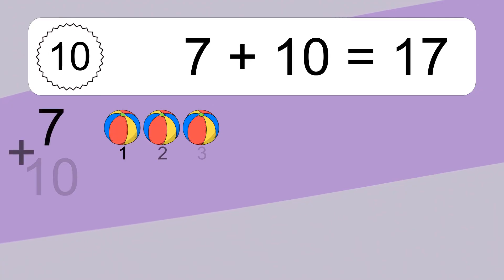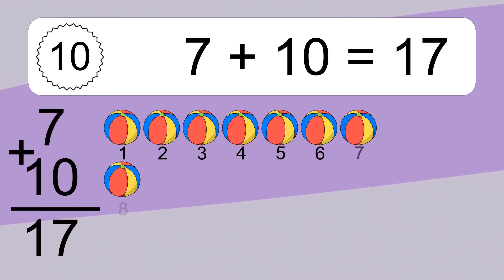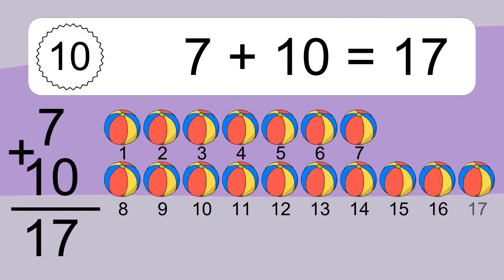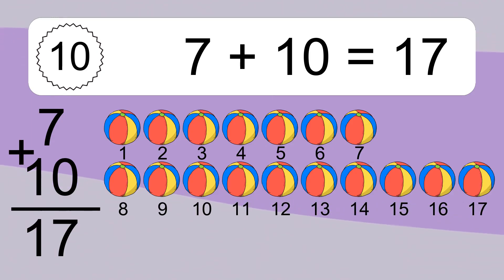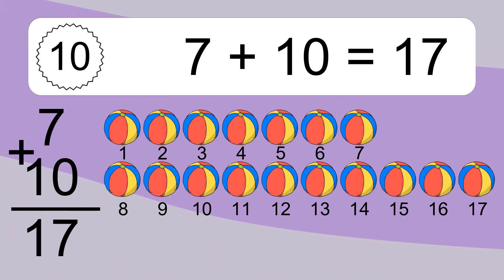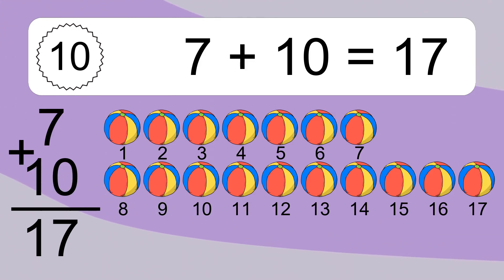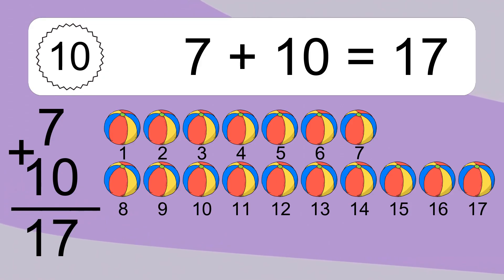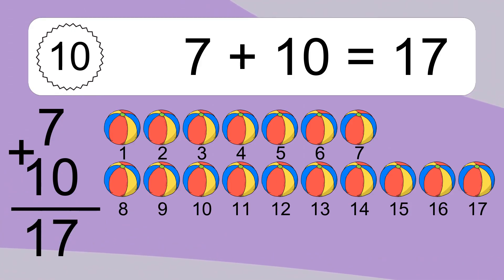7 plus 10 equals what? 7 plus 10 equals 17. Let's count it: 1, 2, 3, 4, 5, 6, 7, 8, 9, 10, 11, 12, 13, 14, 15, 16, 17.